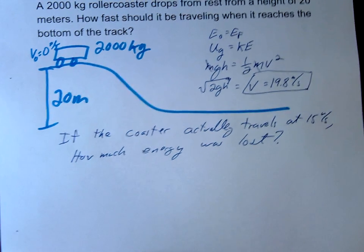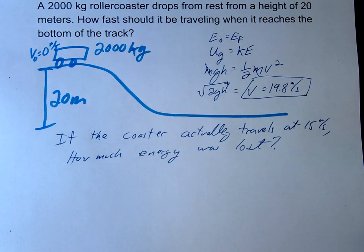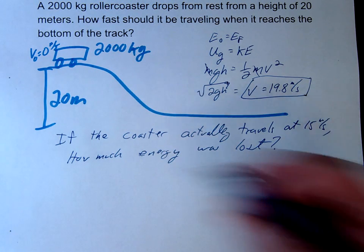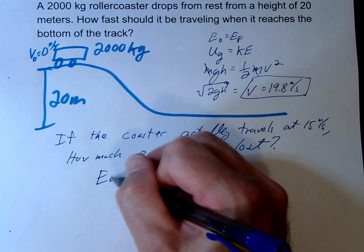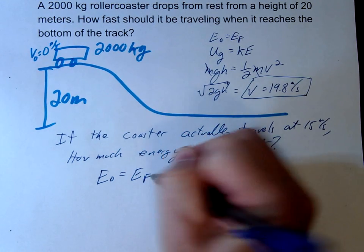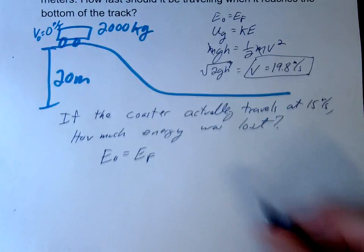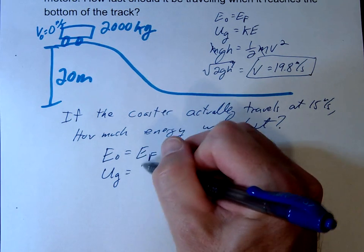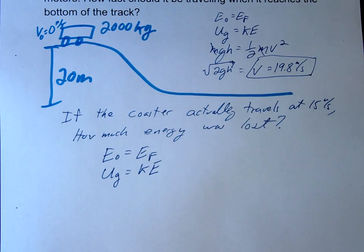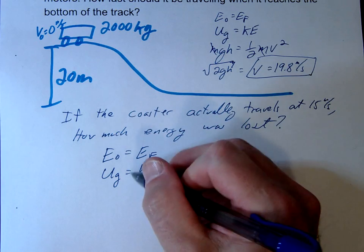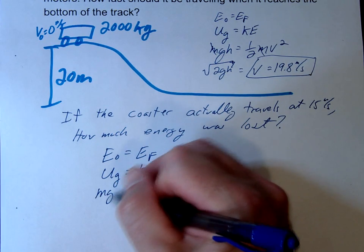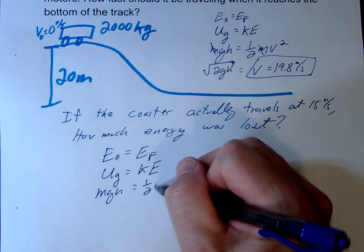We want to know how much energy was lost due to sound, due to heat, due to all these different things. So we'll start the same way, E initial equals E final. And we'll start the same way, UG equals KE. And actually, let's just go ahead and do this.